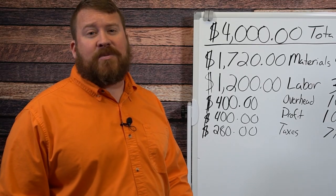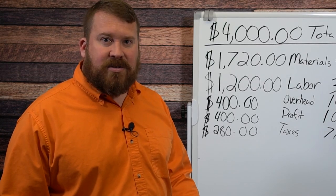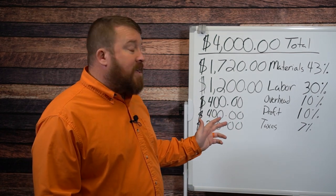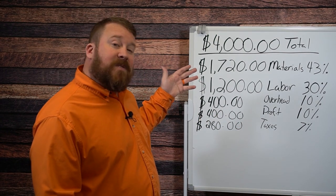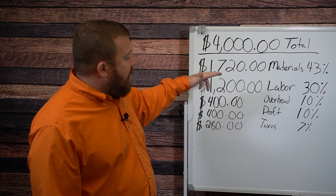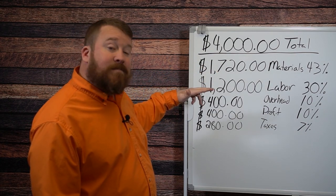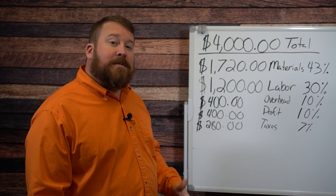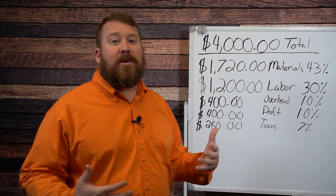At Ozark Fence, they find an average project of around $4,000, so we're using that for today's example. Now that $4,000 gets broken into five different buckets. You have your materials, labor, overhead, profit, and taxes. But sometimes those buckets even have more components within them.